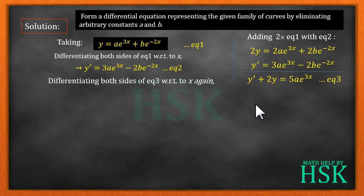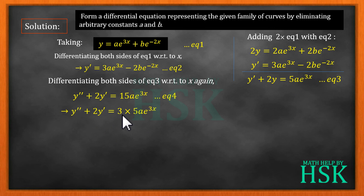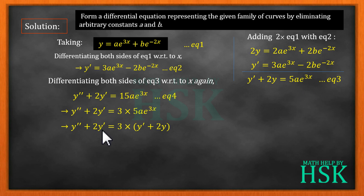Differentiating both sides of equation three with respect to x: the differentiation of y' is y'', of 2y is 2y', and of 5a·e^(3x) is 15a·e^(3x) — this is equation four. Equation four can be written as y'' + 2y' = 3·(5a·e^(3x)). Since from equation three, 5a·e^(3x) = y' + 2y, we substitute to get y'' + 2y' = 3·(y' + 2y).